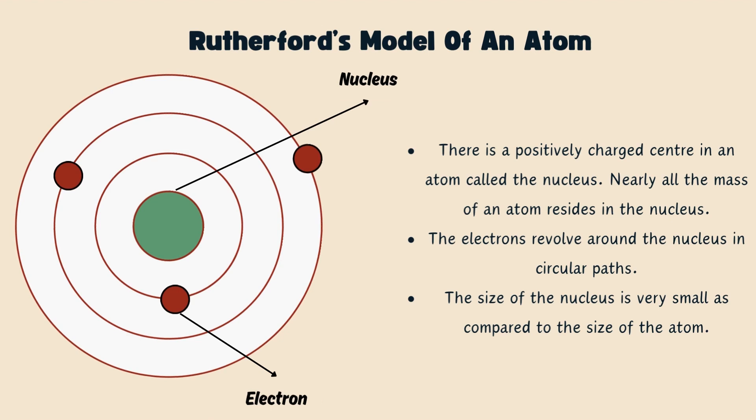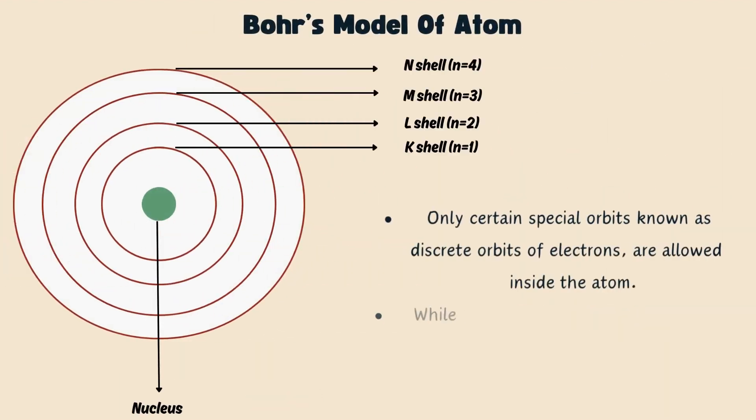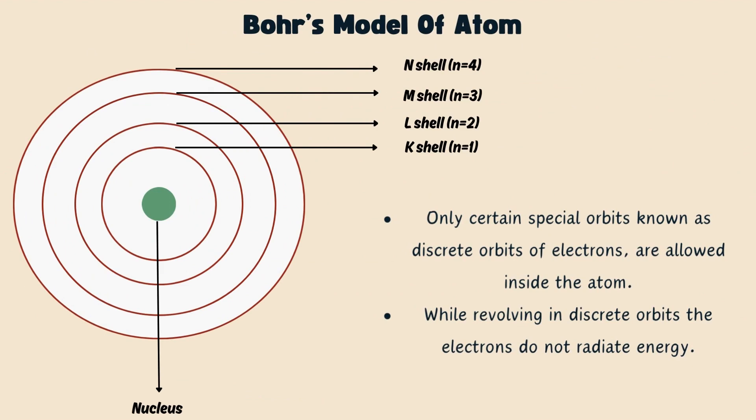Based on this experiment, Rutherford's model of atom stated that there is a positively charged center in an atom called the nucleus. Nearly all the mass of an atom resides in the nucleus. The electrons revolve around the nucleus in circular paths and the size of the nucleus is very small as compared to the size of the atom. But the main drawback of Rutherford's model was the revolution of electron in circular orbit, which may lead to acceleration of electrons that can cause energy to be radiated. This will cause electrons to lose energy and finally fall into the nucleus, making atoms unstable.